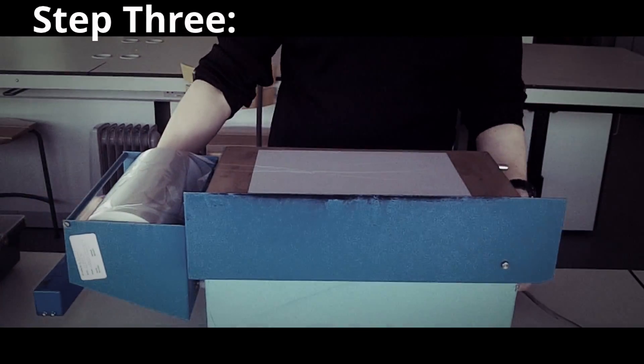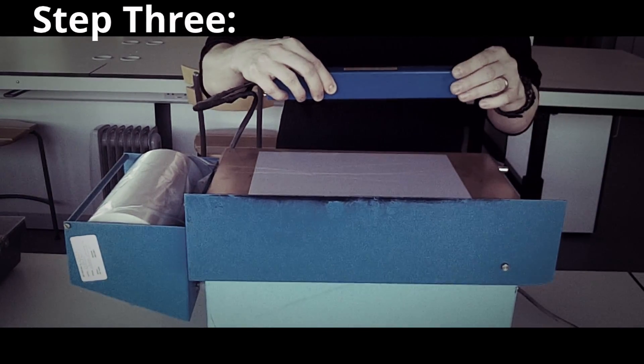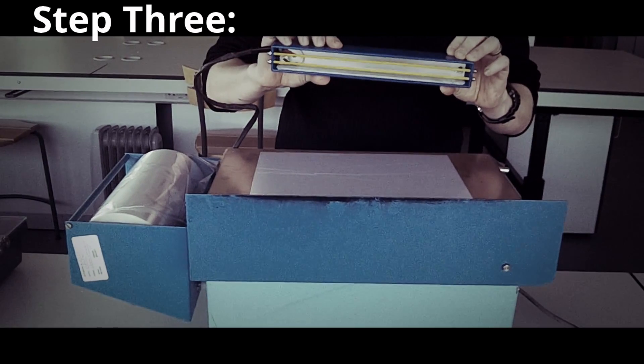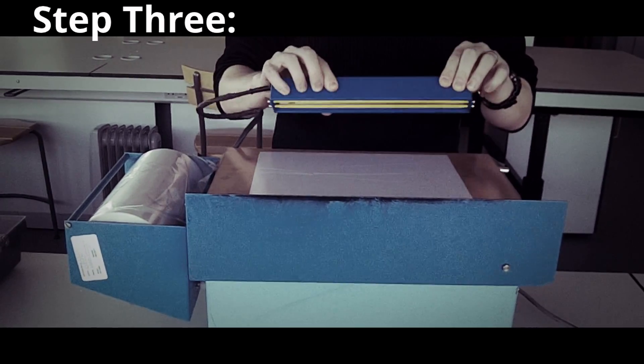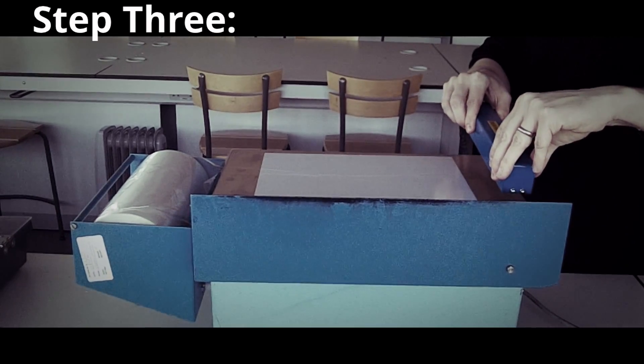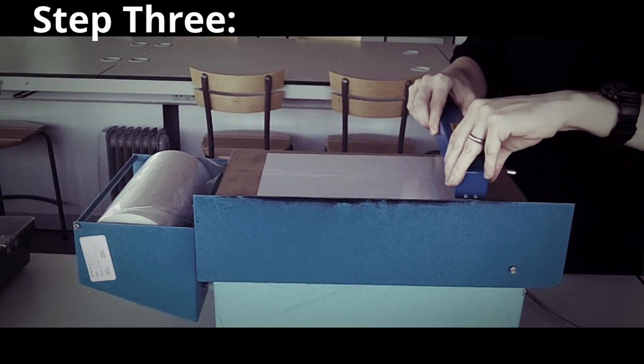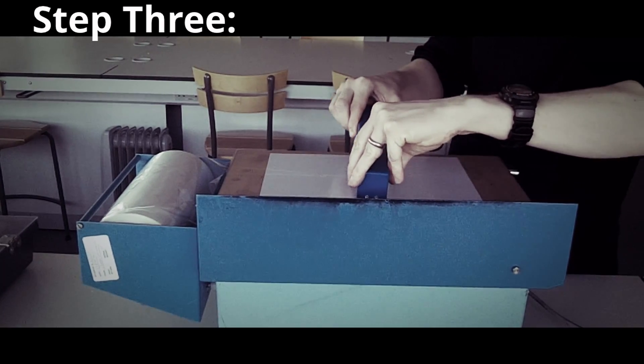The next step is to switch on the Corona device. The Corona device is a high voltage wire. Be very careful to make sure your fingers do not go anywhere near the Corona. Hold the Corona over the surface of the document, about one inch away, and move gently up and down the document.